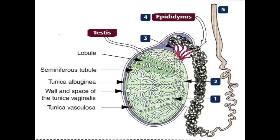Then we have the tunica albuginea. It is called by this name because 'albo' means white, and it is white in color because it is formed of dense white fibrous connective tissue. It is thickened posteriorly to form the mediastinum testis, from which trabeculae arise, dividing the testis into various compartments. Each compartment contains from one to four seminiferous tubules. The innermost layer lining the tunica albuginea is a very thin layer rich in blood vessels called tunica vasculosa.